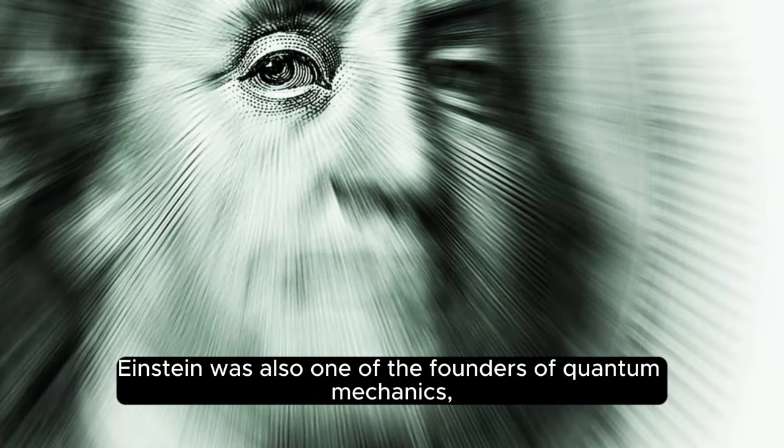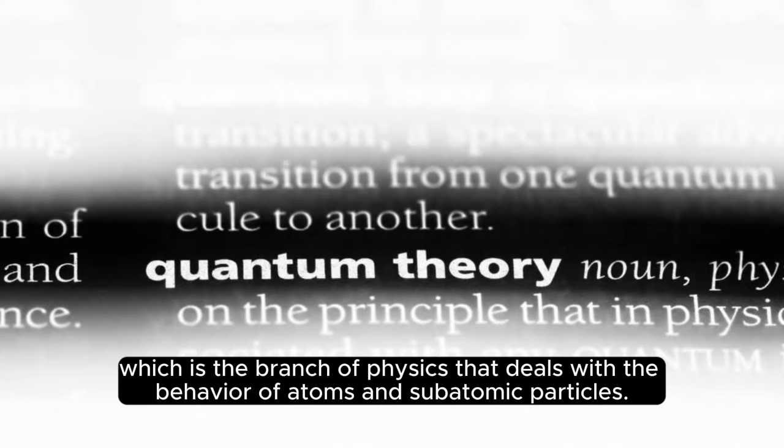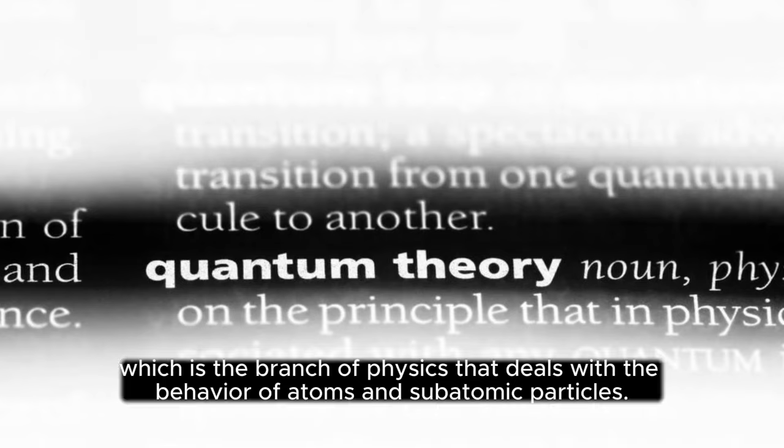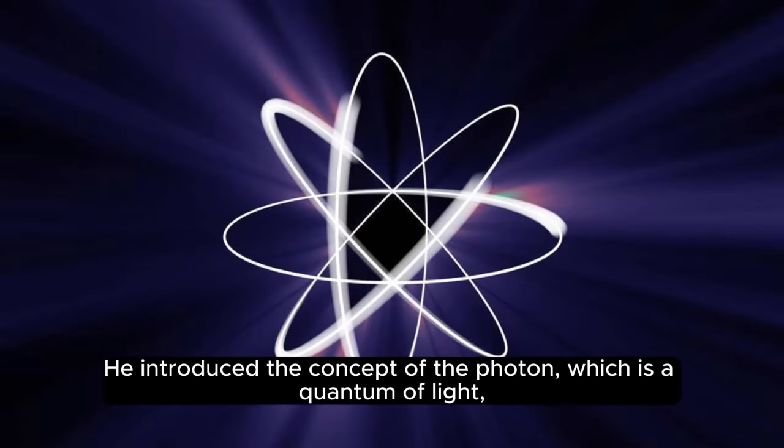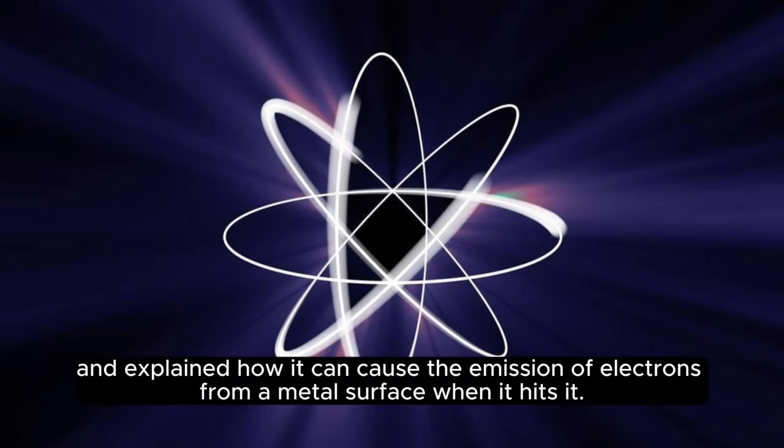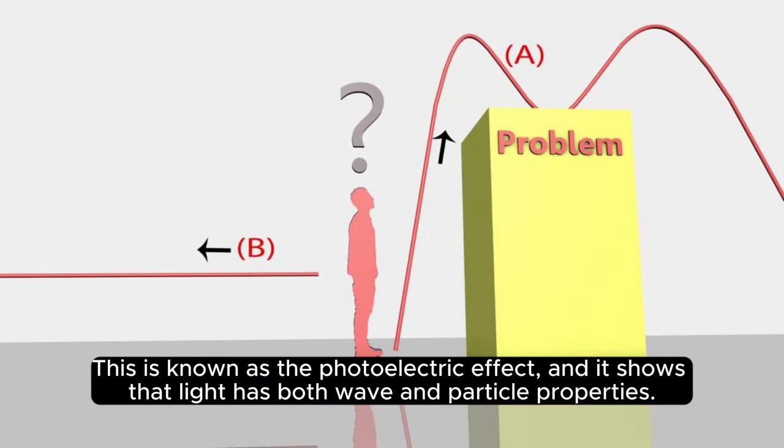Einstein was also one of the founders of quantum mechanics, which is the branch of physics that deals with the behavior of atoms and subatomic particles. He introduced the concept of the photon, which is a quantum of light, and explained how it can cause the emission of electrons from a metal surface when it hits it. This is known as the photoelectric effect, and it shows that light has both wave and particle properties.